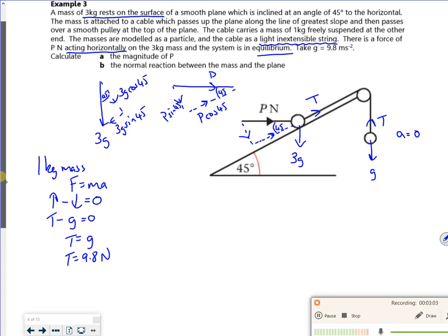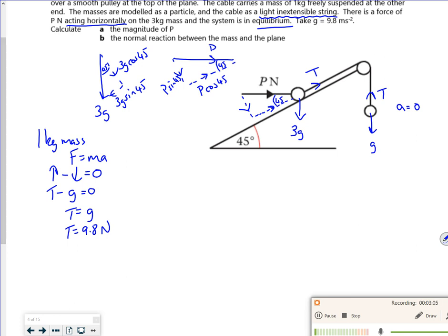There. Right, so now let's have a look. So now I've got the tension. Let's see if that helps me then for working out P. So if I know what T is, so let's have a look at F equals ma. Let's have a look parallel. It might be that we want the perpendicular, but I don't know what else to say. It's not going anywhere.